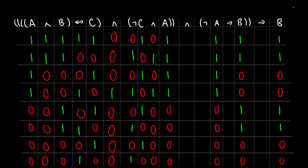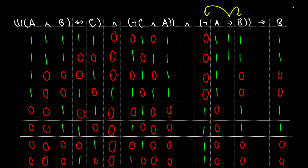Now let's do not A arrow B. Not A just takes information from A and flips the truth value, so one one one one zero zero zero zero becomes zero zero zero zero one one one one. For not A arrow B, this takes information from not A and from B. Remember, this is only false when we have one arrow zero. The first two rows: zero arrow one, true. Third and fourth row: zero arrow zero, true. Fifth row: one arrow one, true. Sixth row: same, true. But in the seventh and eighth row we have one arrow zero, so these are false.